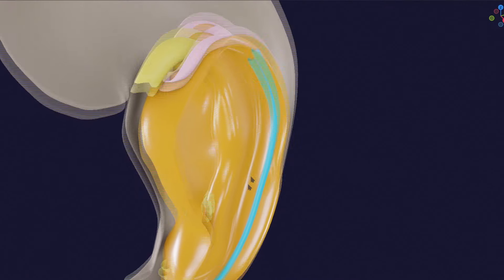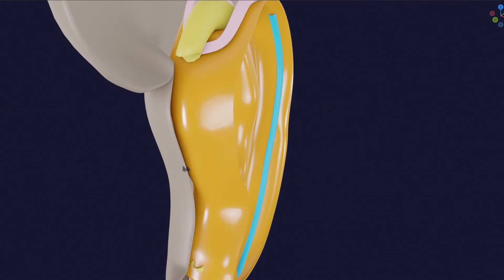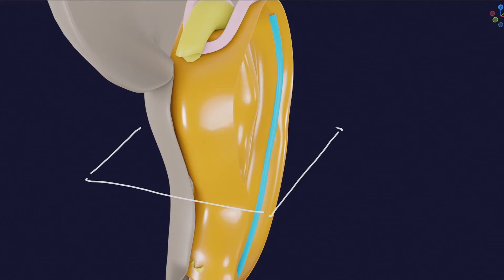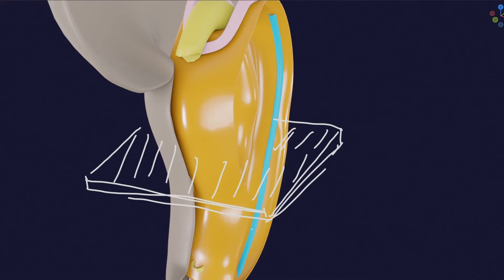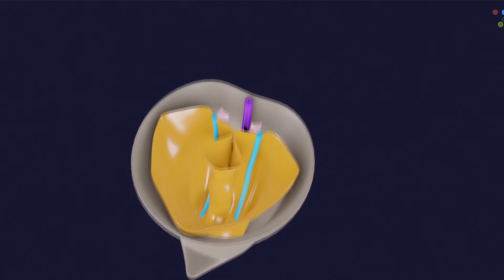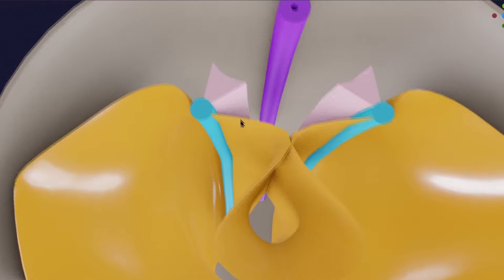Now I will uncut this longitudinal section and take a transverse section of this embryo — a section somewhat like this. In the transverse section, let's appreciate these structures more clearly to understand what actually happened after the folding.